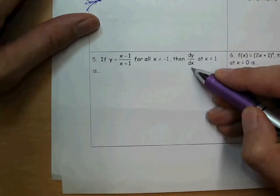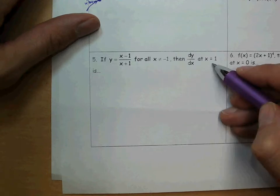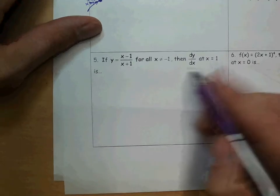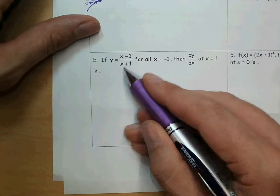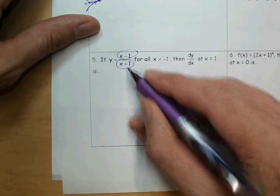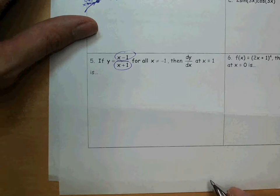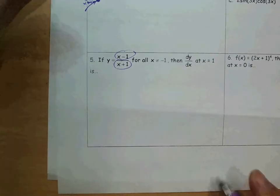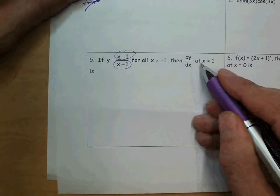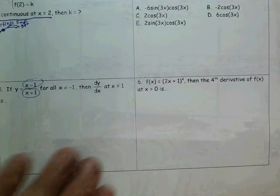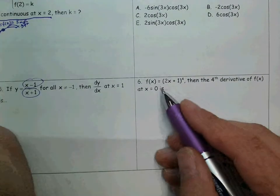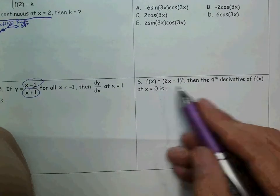This one asks you to do dy/dx at x equals 1. dy/dx means you find the derivative. We should recognize that this is a quotient — a function divided by another function — so you'll need to do the quotient rule. Then plug in x equals 1 once you've done the quotient rule.